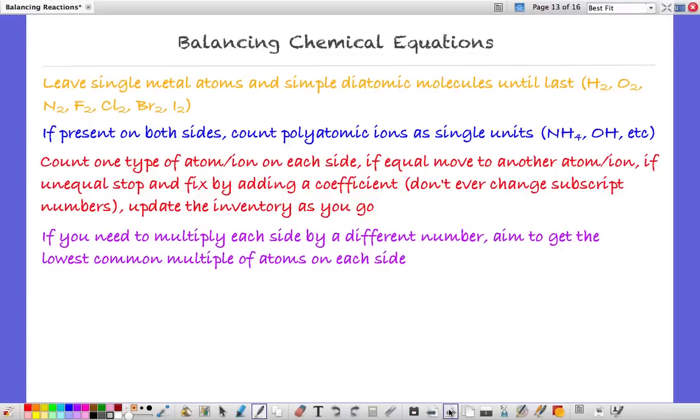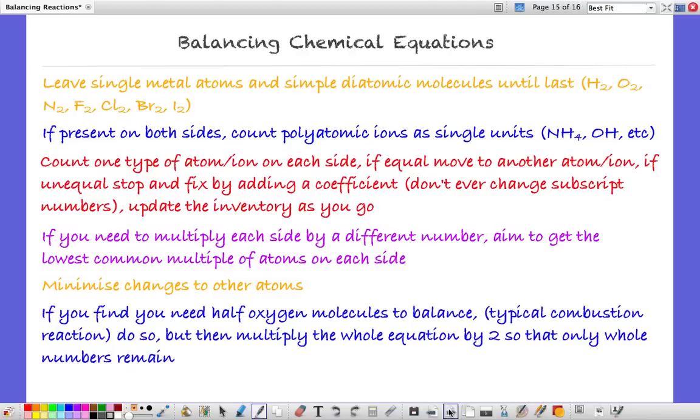If you need to multiply each side by a different number, aim to get the lowest common multiple of atoms on each side. Aim to minimize changes to other atoms as you go. If you need to add half oxygen atoms, for example in a combustion reaction to balance, you can do that. But you need to end up with whole numbers at the end, so you'll have to then double everything.